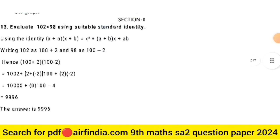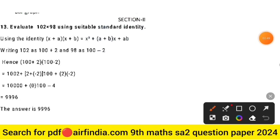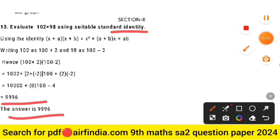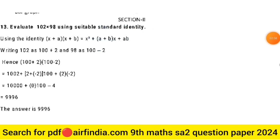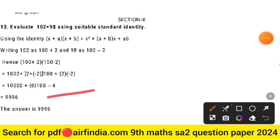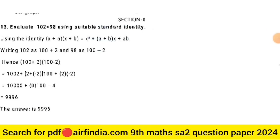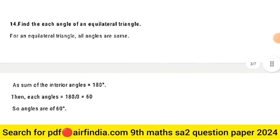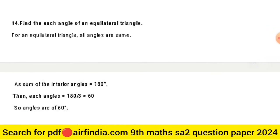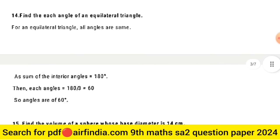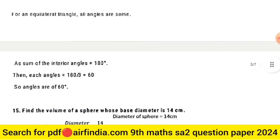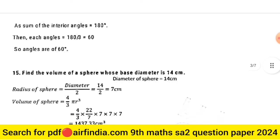Section Second, Question 13: evaluate 102 × 98 using a suitable identity. Follow the steps shown — the answer is 9996.